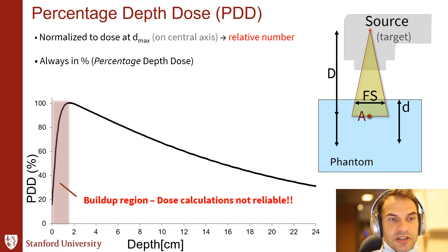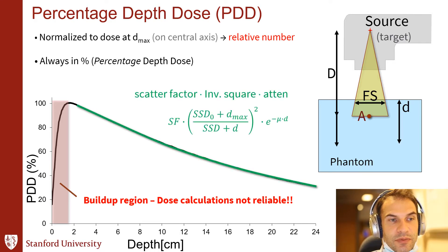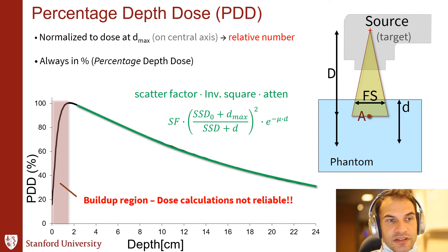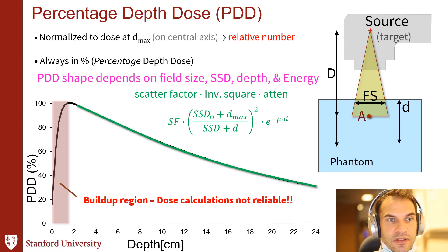There's a build-up region where dose calculations are not reliable. It's due to two reasons: the steepness of the curve there and also the variability of that part of the curve due to varying amounts of contamination from the head of the linac. The curve past the depth of maximum dose is more reliable, but it's a combination of an inverse square function, an exponential decay as a function of depth, and some scatter factors. The PDD shape depends on field size, SSD, depth, and energy.